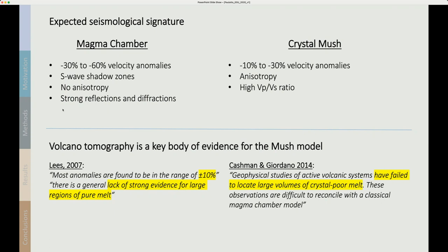Volcano tomography is one of the key pieces of evidence for the mush model. A seminal paper by Jonathan Lees in 2007 reported that most anomalies are found to be in the range of plus or minus 10 percent, having reviewed volcano tomography results for the previous 20 or 30 years. He concluded that there is a general lack of strong evidence for large regions of pure melt. Cashman and Giordano in their review of the mush model in 2014 said that geophysical studies of active volcanic systems have failed to locate large volumes of crystal-poor melt and they took this to represent evidence for the crystal mush model.